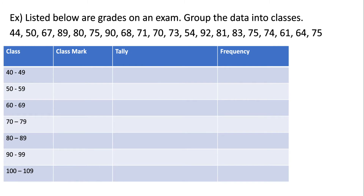The best way to understand how grouping data works is to look at an example. Here we have some grades for an exam and we want to group the data into classes. We've already been given classes. In some problems you may not be given all of the classes, but you'll be told that your lowest class is going to be 40 to 49 and all classes have to have the same size or class width. The first grade we see is 44, so we cross that off and put a tally mark in the 40 to 49 class. Next we have a grade of 50, which goes in the 50 to 59 class. 67 goes in the 60 to 69 class, 89 falls in the 80 to 89 class, and we continue like this for all of the other grades.